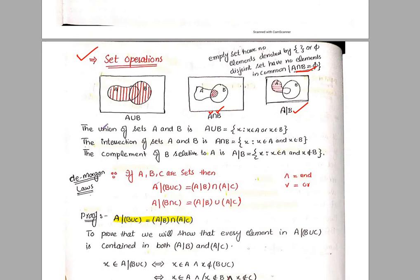Next, A union B — the elements that come into it are those X such that X belongs to A or X belongs to B. So in union, elements from either A or B are included. For intersection, A intersection B contains those X such that X belongs to A and X belongs to B — meaning the elements belong to both A and B.